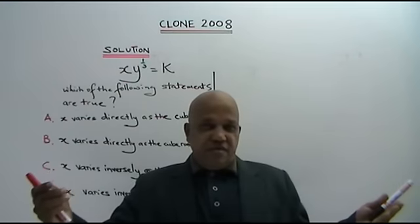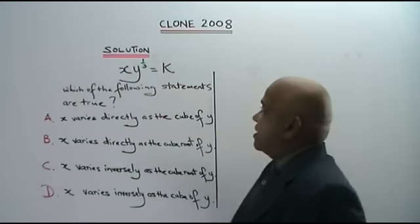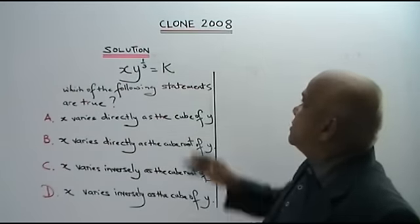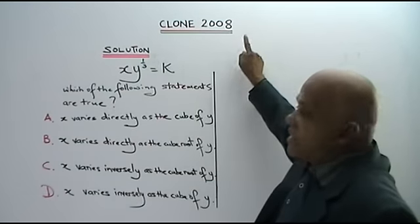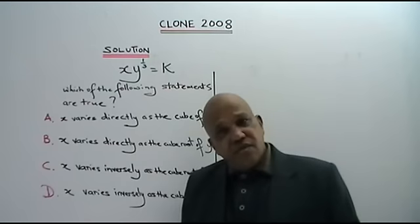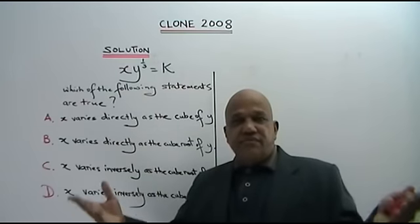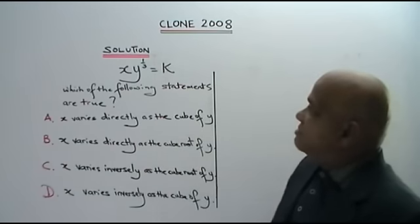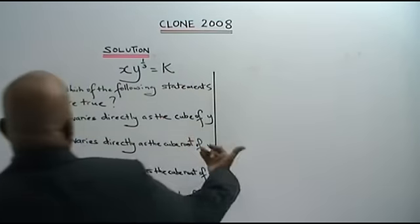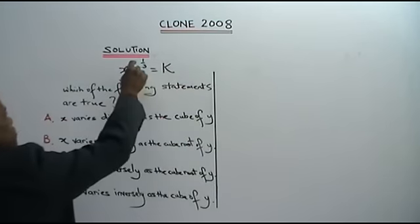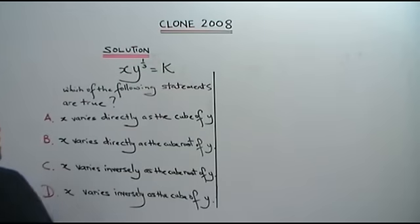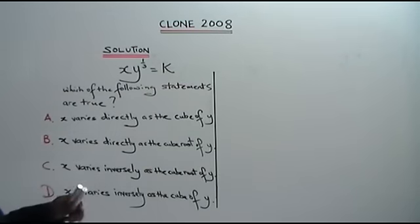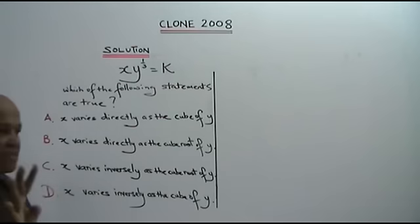Hi, here I have for you another clone question based on the year 2008, based on inverse variation. Let's see how this is done. You are given x times y to the power of 1 over 3 equals k. Which of the following statements are true? You got 4 statements here.